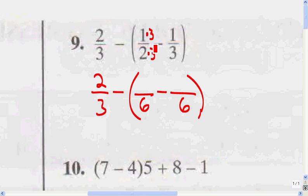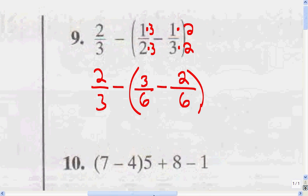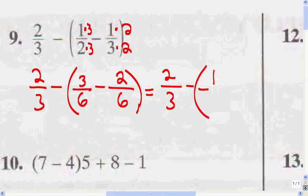Whatever I do to the denominator, I have to do to the numerator. So since I multiplied the denominator by 3, I multiply the numerator by 3: 1 times 3 is 3. Now for the second fraction, I multiplied this denominator by 2 — 3 times 2 equals 6 — so I multiply the numerator by 2: 2 times 1 is 2. Now that I have the common denominator, I can do what's inside the parentheses: 3 minus 2 is 1, and the denominator stays the same, so 1 over 6.